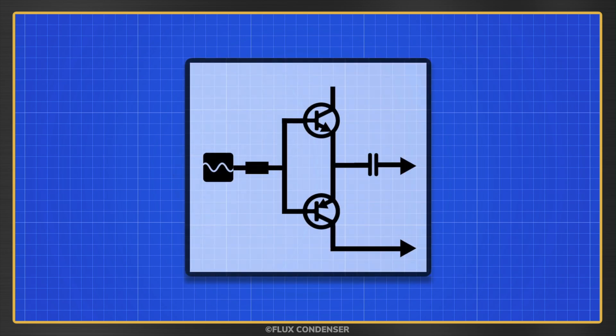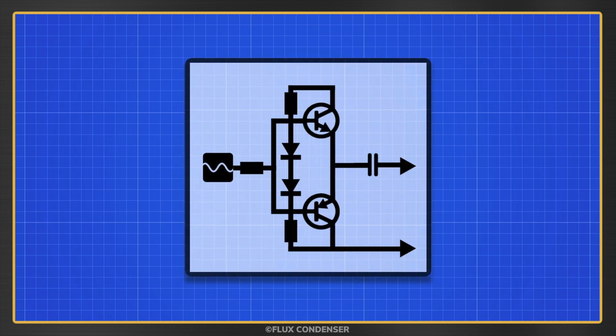If this is a class A amp and this is a class B amp, then what is this thing called?